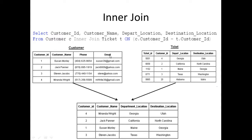When you're working with an inner join, that's when you return records that have at least one match between two or more tables. As you can see here in the customer table, we have the first customer, Susan Morley, who has a customer ID of one. She also has a customer ID in this ticket table, which holds a foreign key to the customer ID — the primary key of the customer table. When we perform a join, we're returning records that have at least one match between two tables, so we have one and one which match.